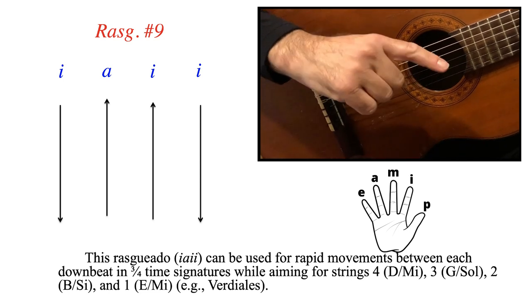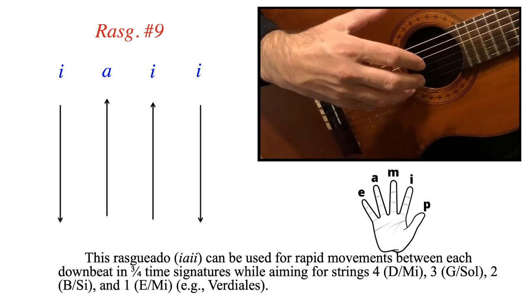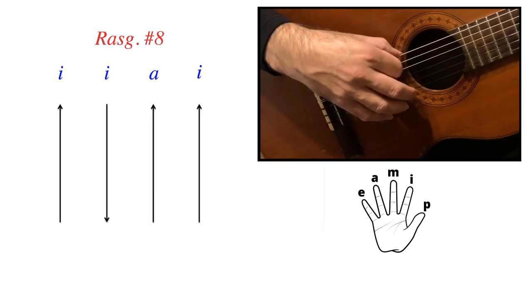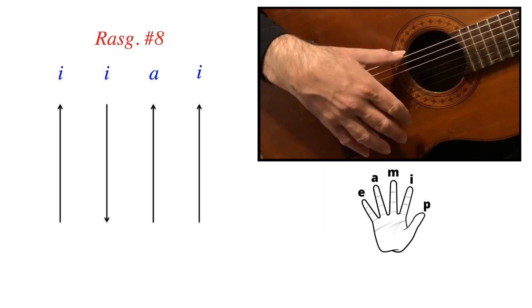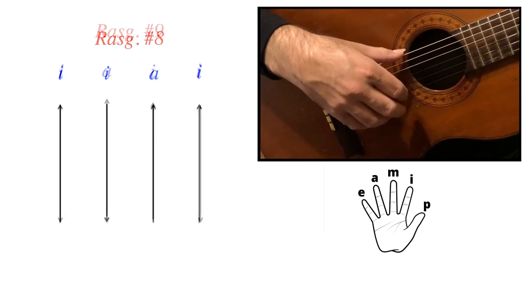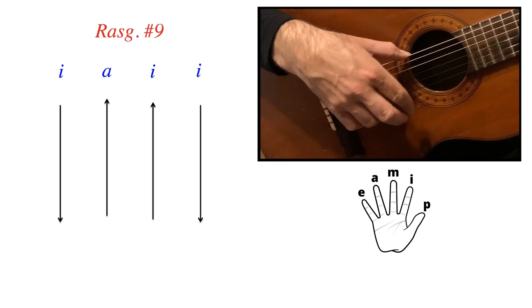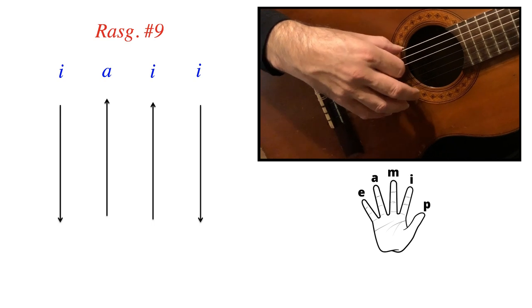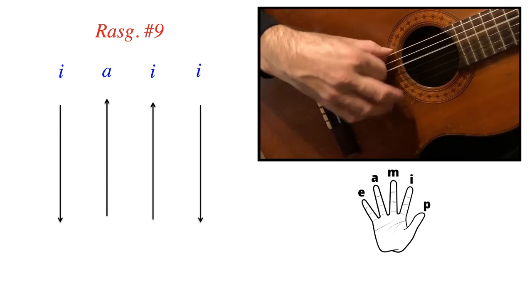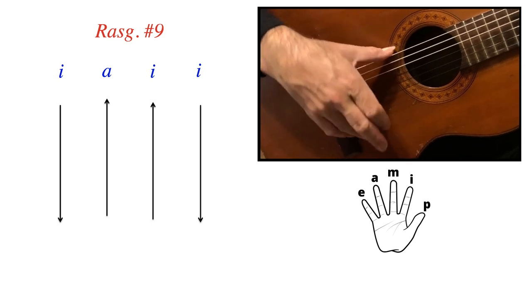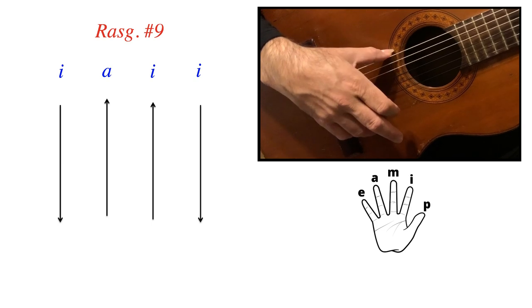Now let's go back to what I was talking about earlier, tying in number 9 with number 8. How do we do that? So if we go back to number 8, we have downward I, upward I, downward A, downward I. And then if we sequentially do it with number 9, which is upward I, downward A, downward I, and upward I. What do we get? Something we could use in Alegrias.